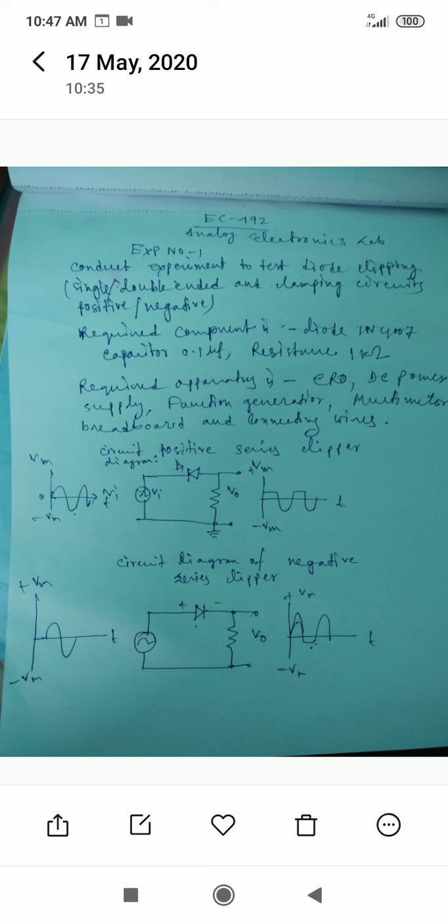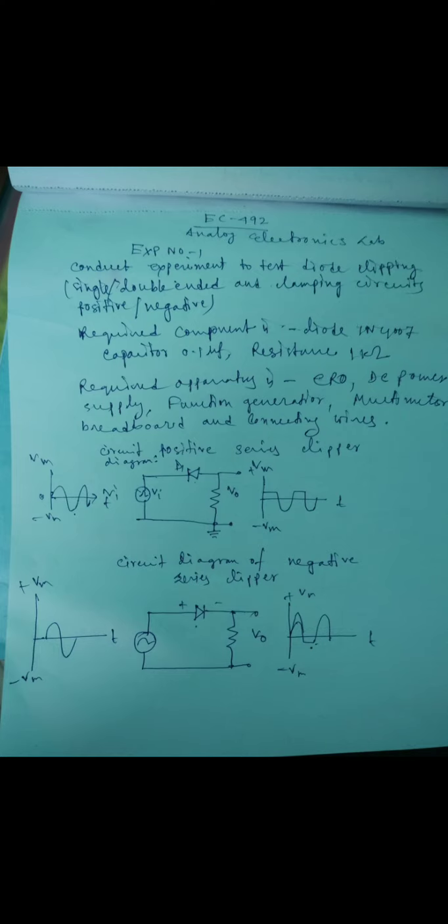The connection of Circuit Diagram is, this is VI input. Diode D1 is connected in series with VI and load RL connected to the negative positive part of diode. And we will get output from here.